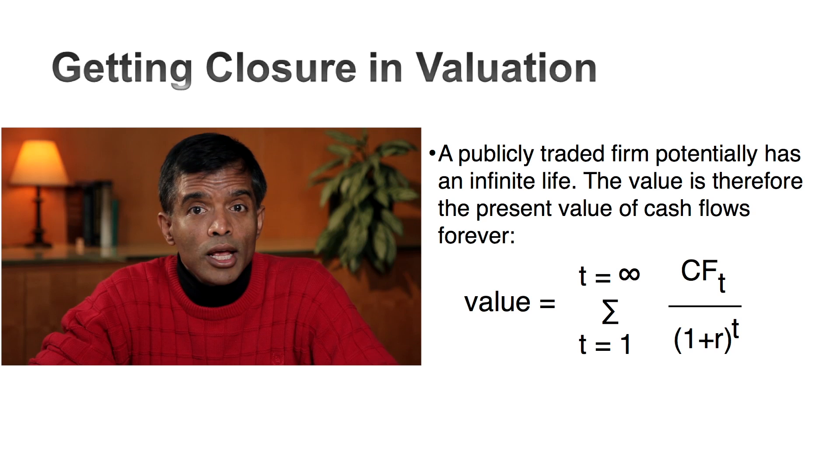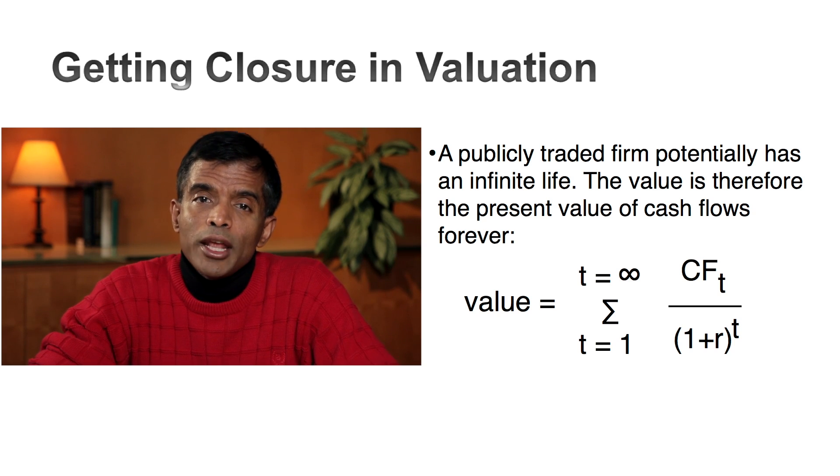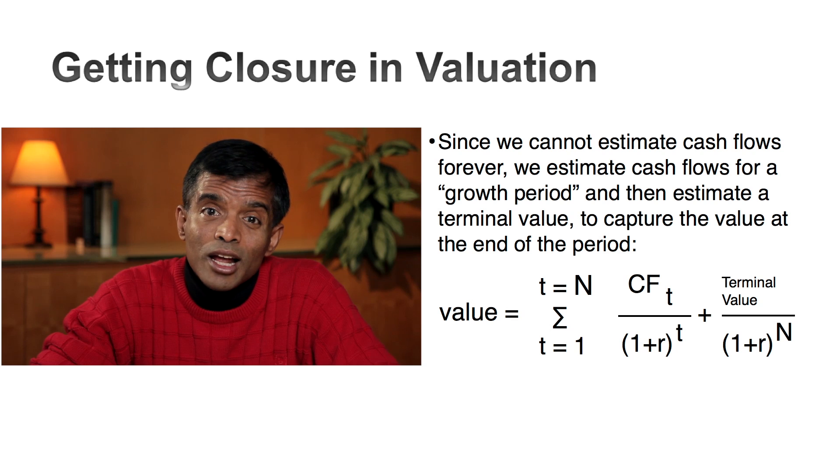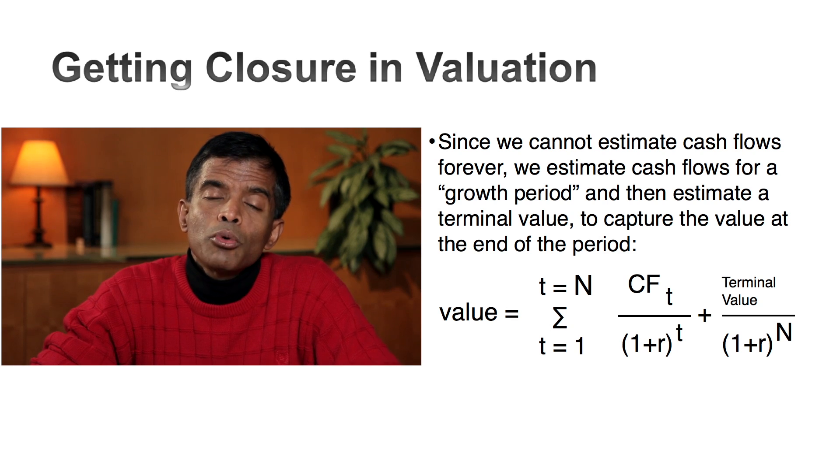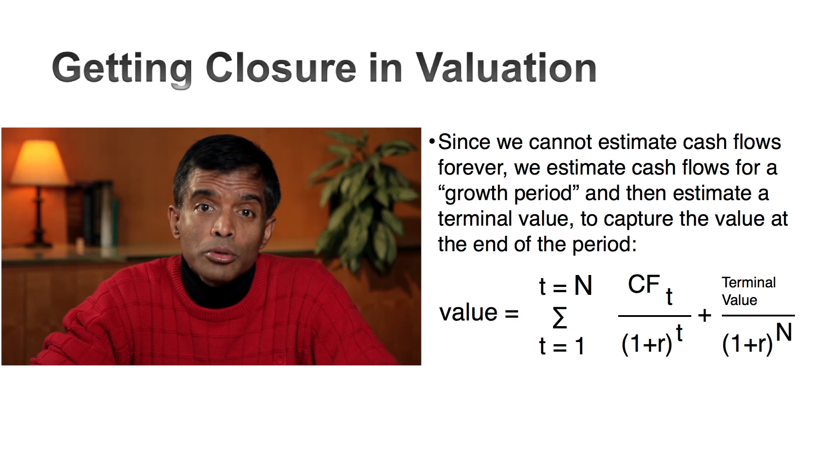We've talked about cash flows, discount rates, and growth rates. We have one final piece in this puzzle that we've got to get in place for valuation to work. We have to put some closure on this process. You can't estimate cash flows forever. The value of an asset is the present value of its expected cash flows over time. But what if you have an asset that potentially could last forever, as is the case with a publicly traded company? Since you cannot estimate cash flows forever, at some point you've got to stop — but you can't give up on cash flows either. What most people do is estimate what's called a terminal value, which acts as a bookend to capture what will happen beyond year five or ten.